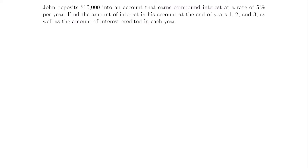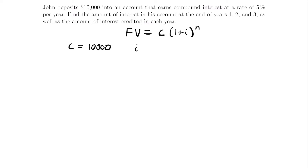John deposits $10,000 into an account that earns compound interest at a rate of 5% per year. Find the amount of interest in his account at the end of years one, two, and three, as well as the amount of interest credited in each year. So we'll start by writing our equation: the future value equals the initial deposit times one plus the interest rate to the number of years as the power. We know that our initial deposit C is $10,000, and our interest rate is 5%, which equals 0.05.